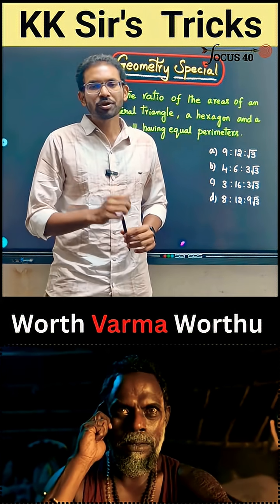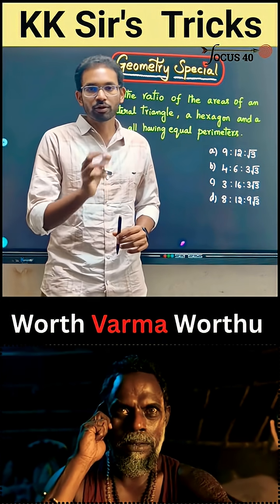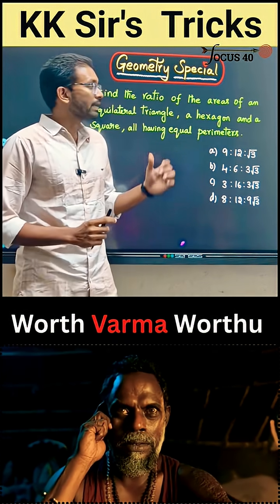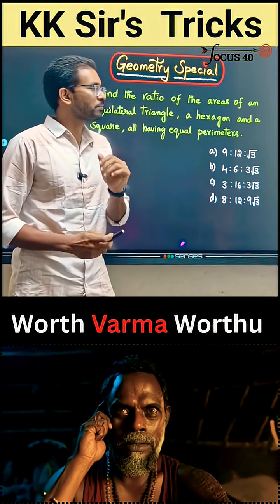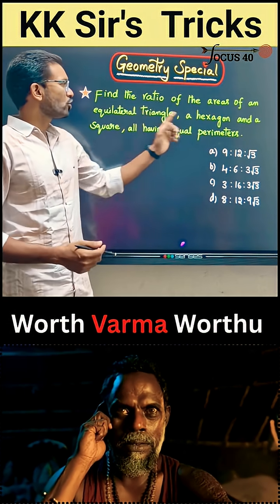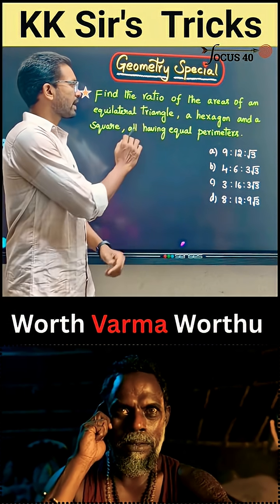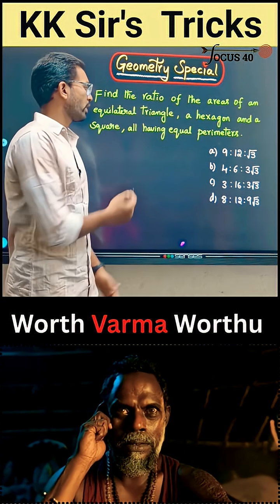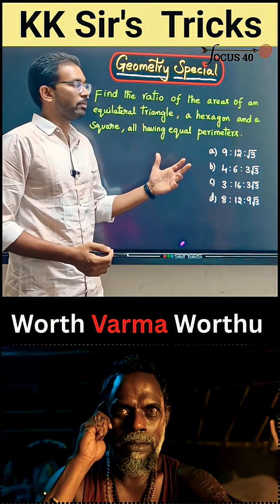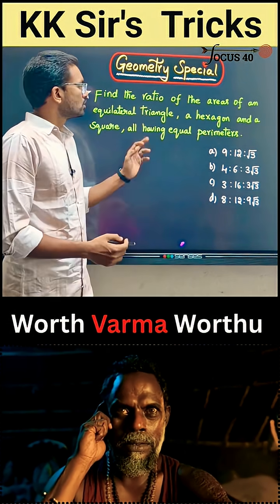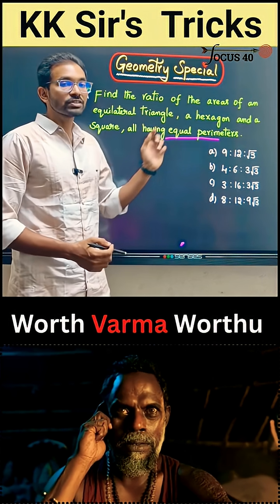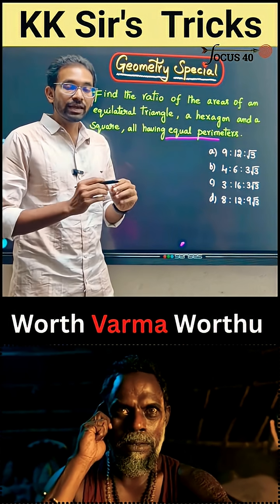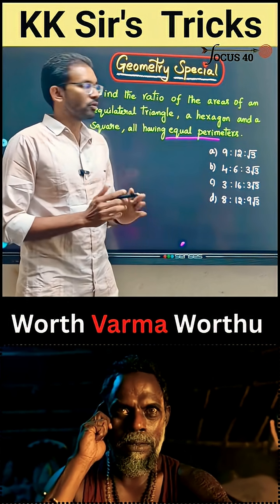Geometry is an important model for SSE exams and this question will be solved in the shortest time. Find the ratio of areas of an equilateral triangle, hexagon, and square — all having equal perimeters. So we need to find the area ratio of these three figures with equal perimeters.